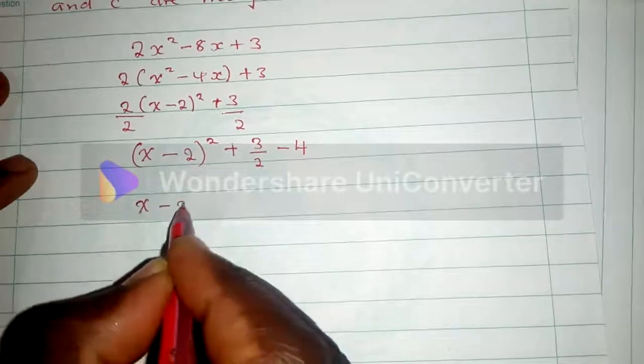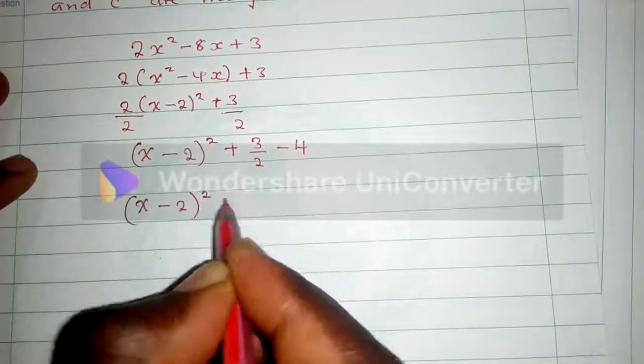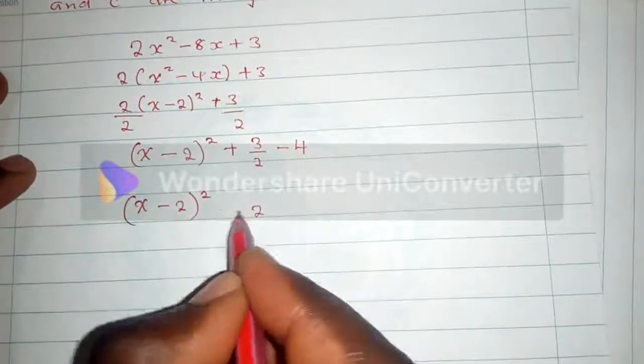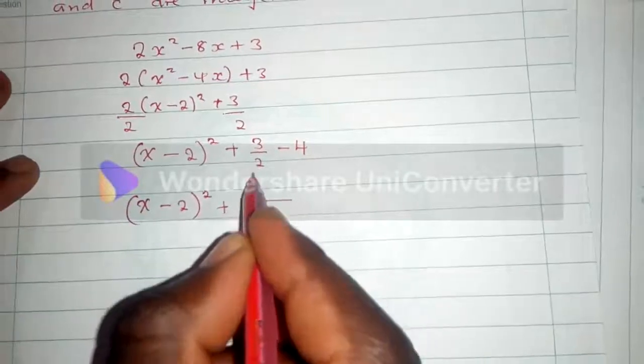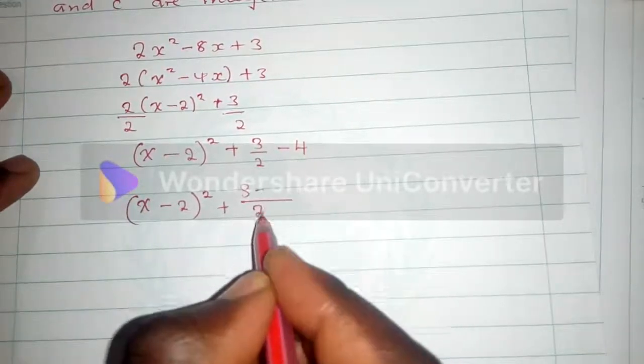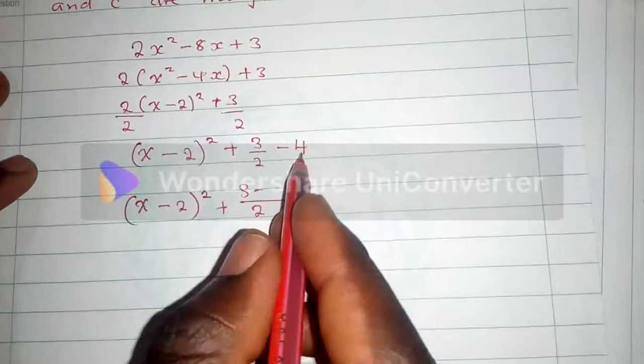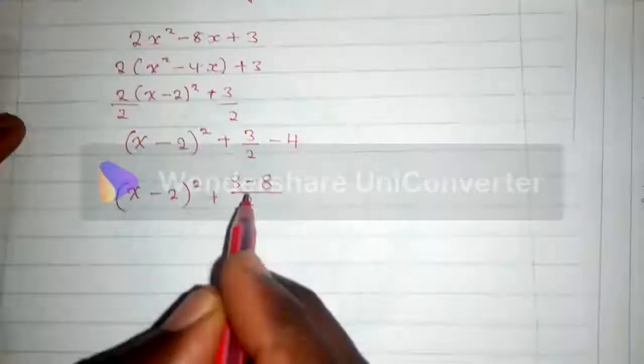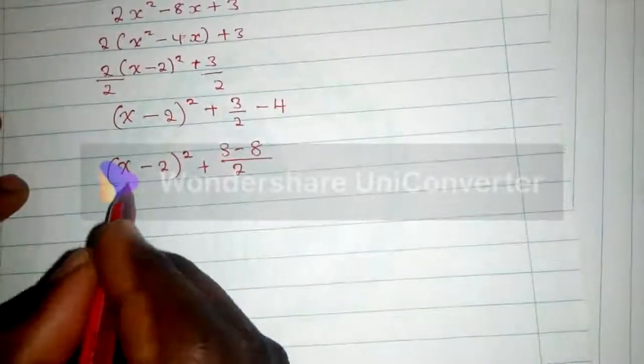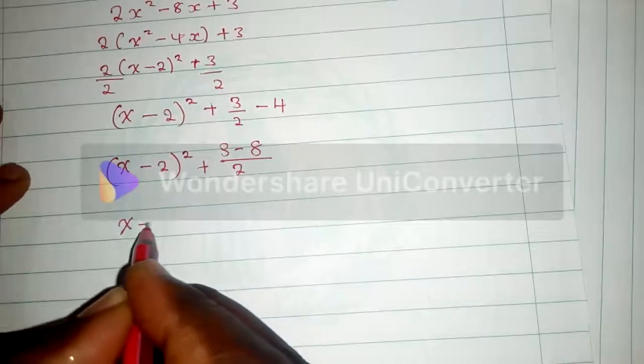After that, copy everything and then you can solve here. Common denominator is 2: 3 minus 1 into 2, 2 times 4 is 8. So when you solve, you have something like (x - 2)².